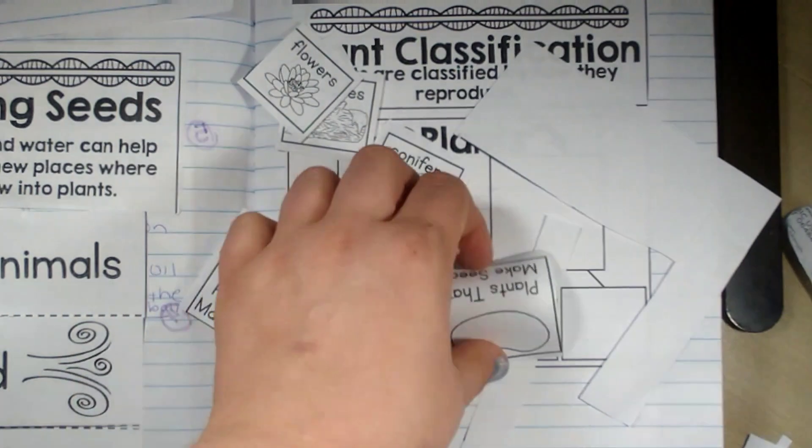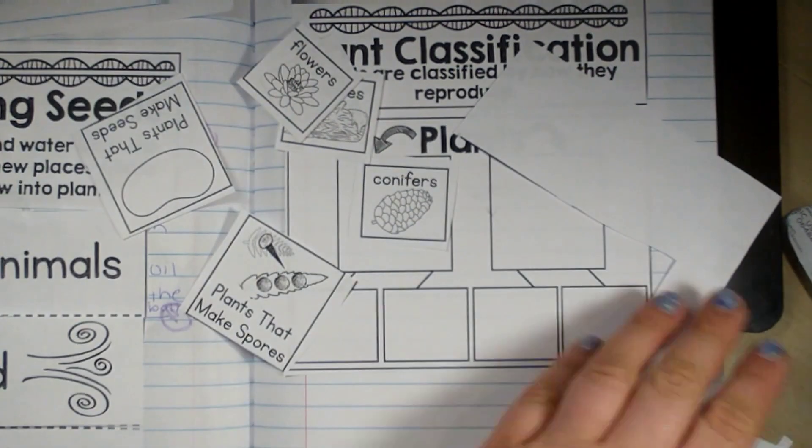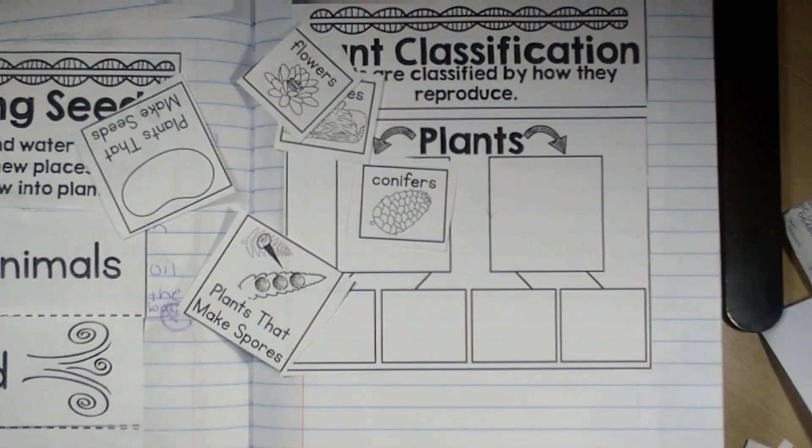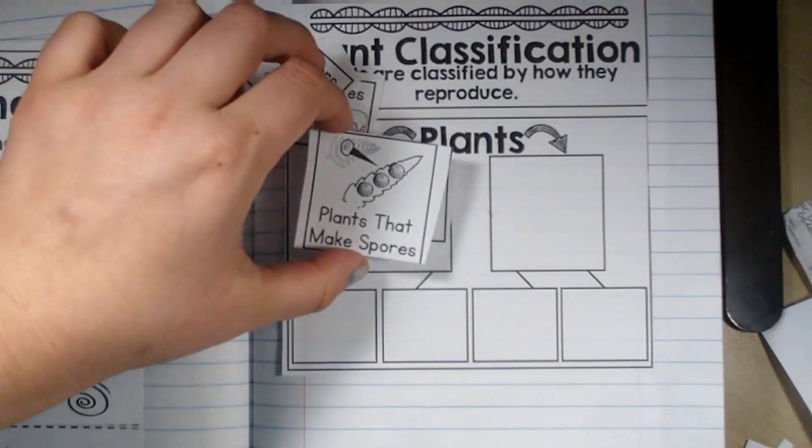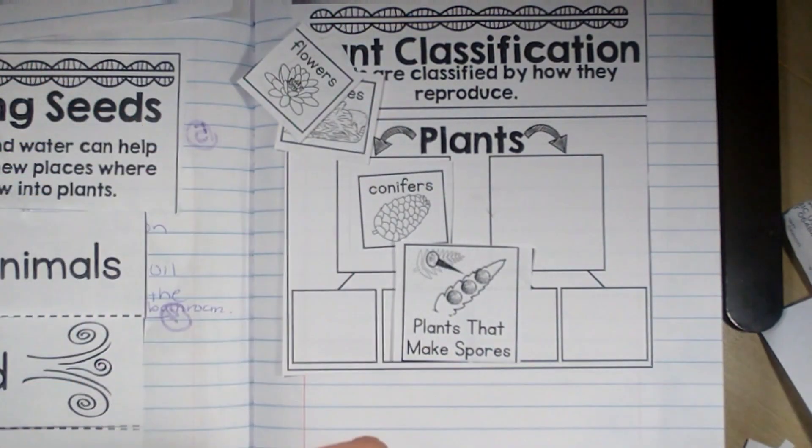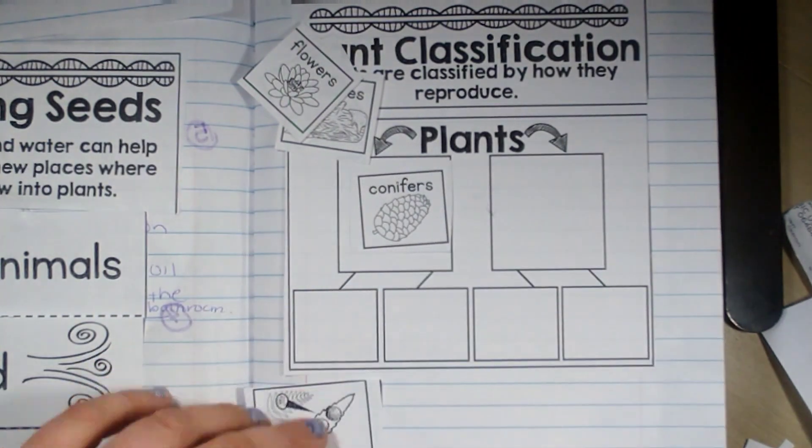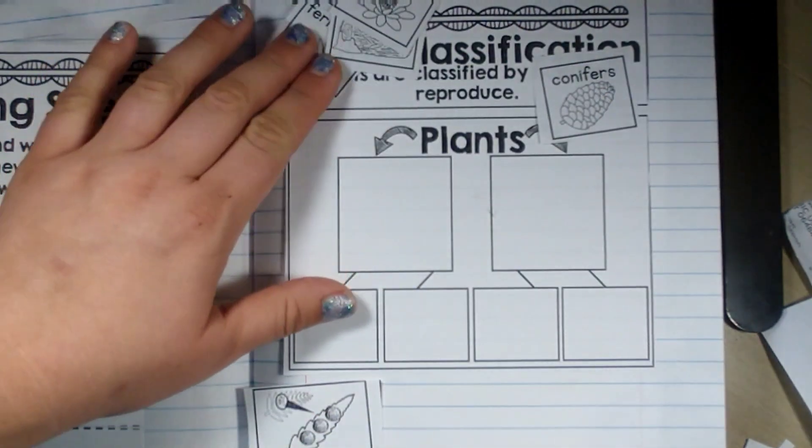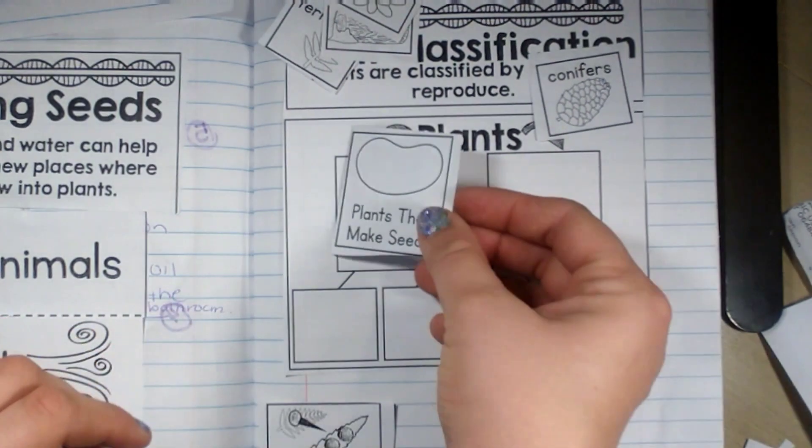So we have plants that make seeds and plants that make spores. Spores meaning something that's kind of like a seed but smaller. They are spread differently and they grow differently as well.